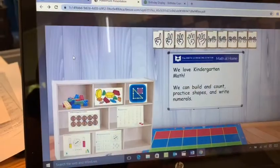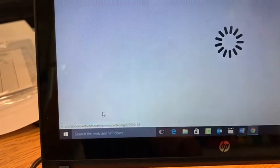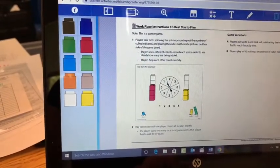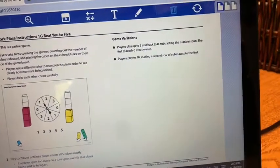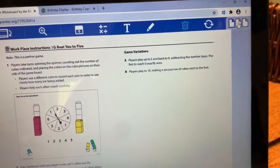All right. All right, the next game is Beat You to Five. It's down here in the corner. Click on it. Wow! This one has the unifix cubes in it. Again, go to the next page. It's right here.